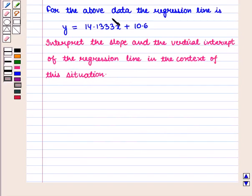For the above data, the regression line is given by the equation y equals 14.1333x plus 10.6. Interpret the slope and the vertical intercept of the regression line in the context of this situation.